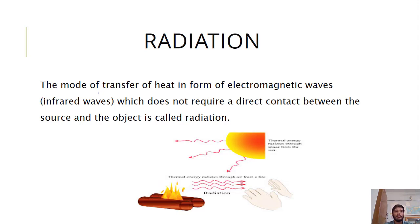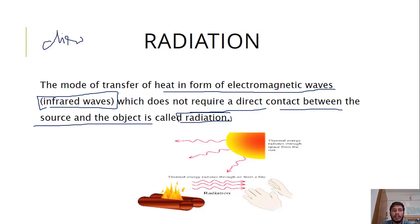The mode of transfer of heat in form of electromagnetic waves, basically infrared waves, which does not require a direct contact between source and the object, this is called radiation. Conduction or convection requires direct contact with heat between source and substance. In radiation there is no direct contact. Energy directly comes from the sun, thermal energy you receive on earth and you feel hot. Similarly from fire it reaches your hands and you tend to feel warm. This is radiation.